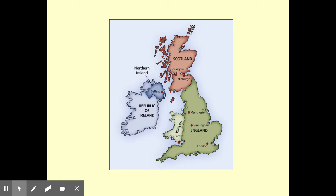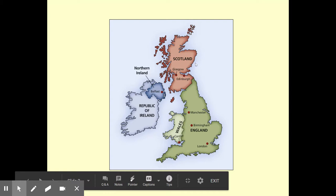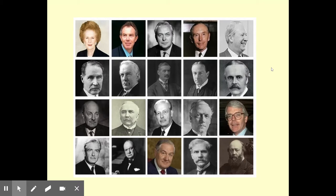Great Britain consists of three parts: England, Scotland, and Wales. So British Constitutionalism and English Constitutionalism — it all took root within London and Parliament there, but as of today the British Parliament, or the British system of Constitutionalism, governs over all parts of the United Kingdom.